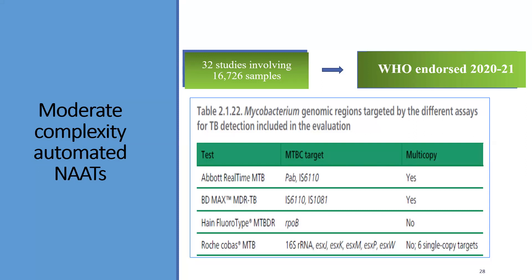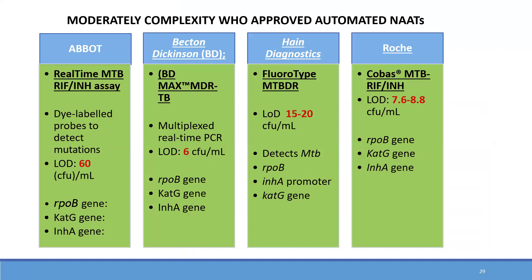Moderate complexity NATs include WHO-endorsed 2021 tests: real-time PCR platforms including Abbott m2000, IS6110, BD MAX, Hain FluoroType, and Roche COBAS. These moderate complexity WHO-approved automated NAATs include the real-time MTB/RIF/INH assay from Becton-Dickinson, Hain Diagnostic, and Roche. These four assays have their own individual platforms and were recently introduced. They detect MTB, rifampicin, and INH. The limit of detection is very low — in some cases comparable to or even lower than GeneXpert — though more studies need to be done. They are not yet introduced in the NTP but are used in the private sector and are recommended for respiratory samples only.